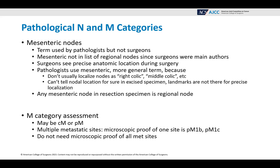The M category assessment, as discussed in clinical staging, may be either cM or pM because it's based on the method of assessment, not the classification. For multiple metastatic sites, you only need microscopic proof of one site to assign pM1B or pM1C — you do not need microscopic proof of all of the metastatic sites.